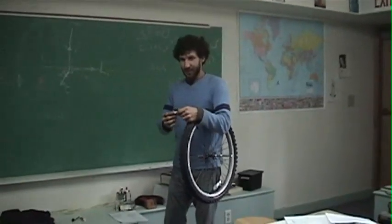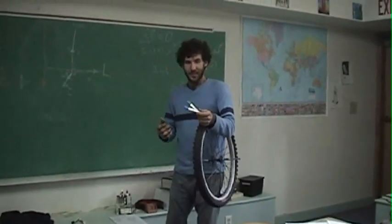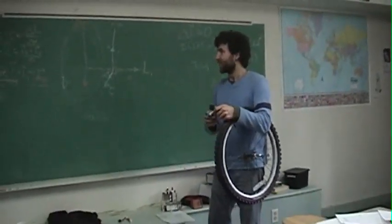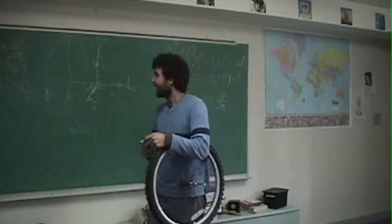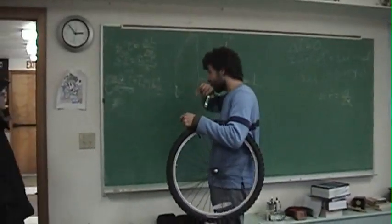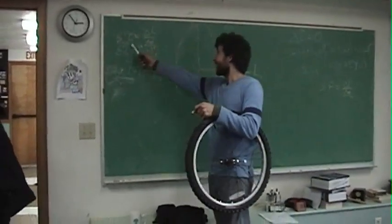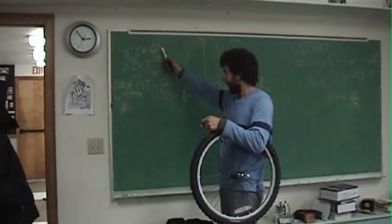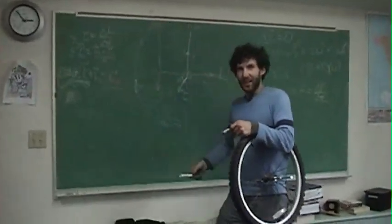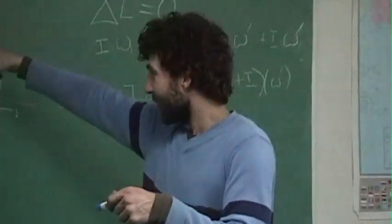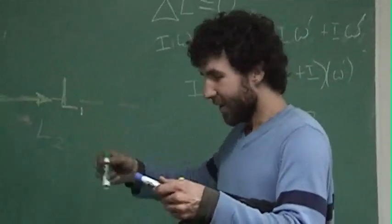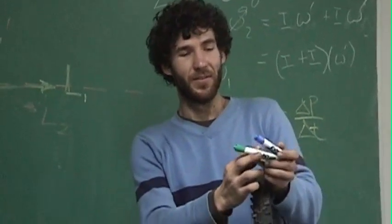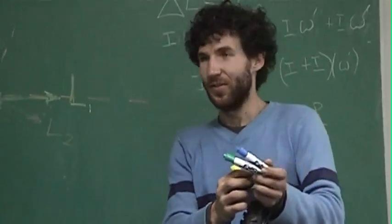This is a gyroscope demonstration. The sum of the torques equals the change in angular momentum divided by the change in time. Here's the diagram of what's going on, and I'm going to use these markers to represent the various vectors involved.